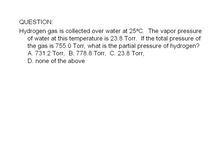Hydrogen gas is collected over water at 25 degrees Celsius. The vapor pressure of water at this temperature is 23.8 Torr. If the total pressure of the gas is 755 Torr, what is the partial pressure of hydrogen?